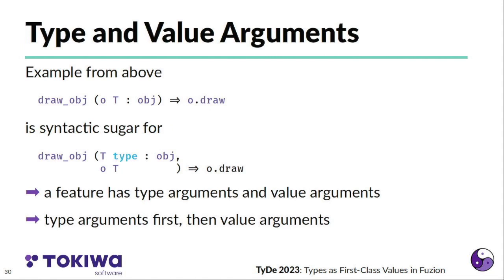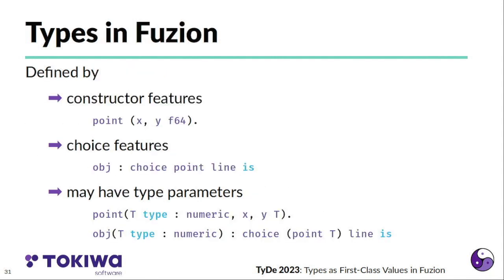Coming back to the example with parametric types before that I've shown where an object O of type T that inherits from an object is called, what I've shown you is actually just a syntactic sugar of the explicit version. Draw object actually has two arguments. It has a T, which is a type that must be object or any subclass of that, and a value argument that is exactly of that type. So each feature that can be called can have a set of type arguments and a set of value arguments, and the type arguments always, by convention, always come first before the value arguments. But syntactically, they are kept as close as possible to the value arguments.